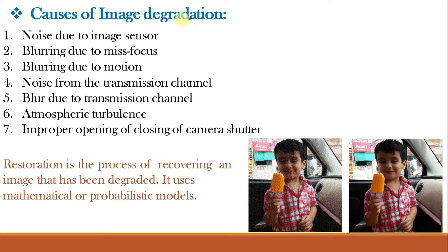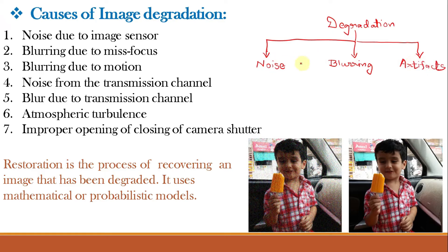Broadly, image degradation is due to three factors: noise, blurring, and artifacts. Noise is any addition of undesired intensity levels to the image. Blurring occurs due to mis-focus or motion. Artifacts may get added during transmission or storage, resulting in undesirable variations in intensity. Causes include: noise due to image sensors, blurring due to focusing error, and blurring due to motion of the object or camera shake.